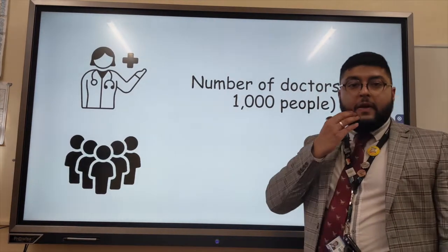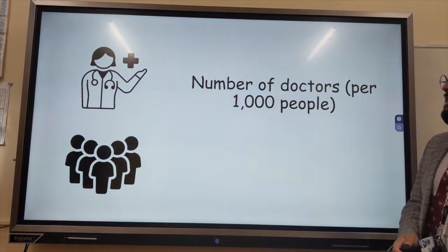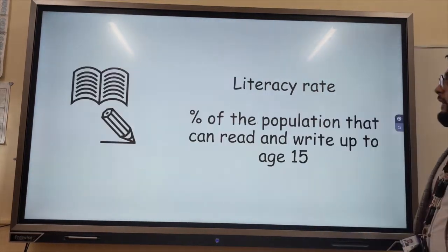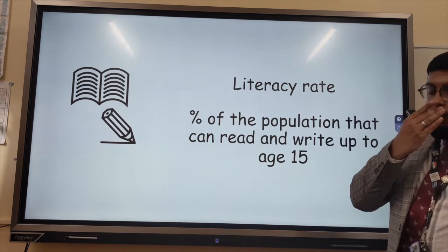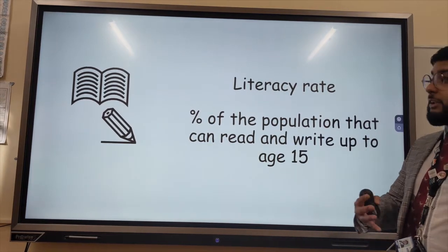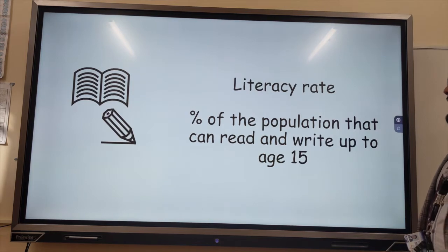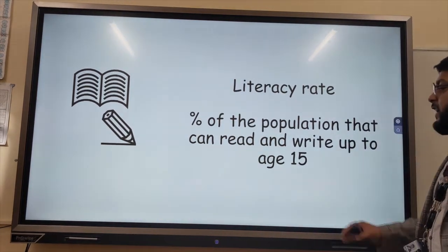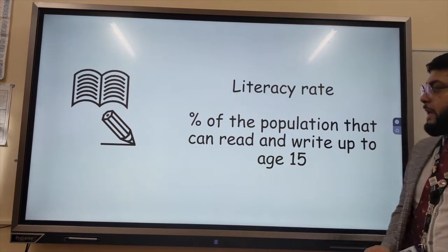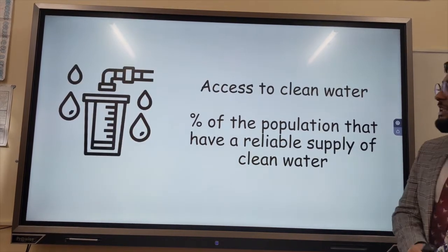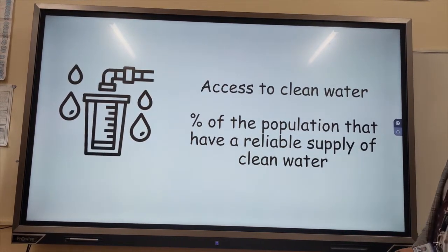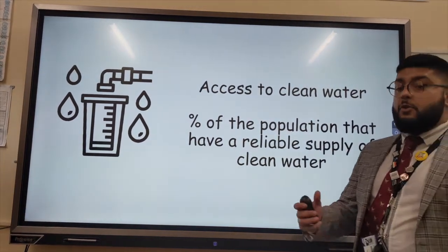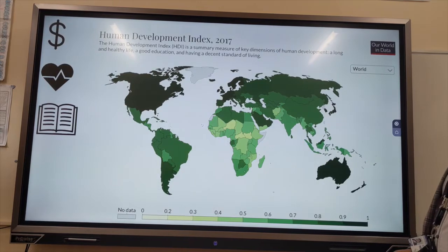The number of doctors per thousand people is again a good social measure of development because it tells us the quality of healthcare in a country. Literacy rate is another way to measure the social well-being of a country — that's the percentage of the population that can read and write up to the age of 15, which is the age people leave school. Access to clean water is the percentage of the population that have a reliable supply of clean water — that word reliable and clean is really important.